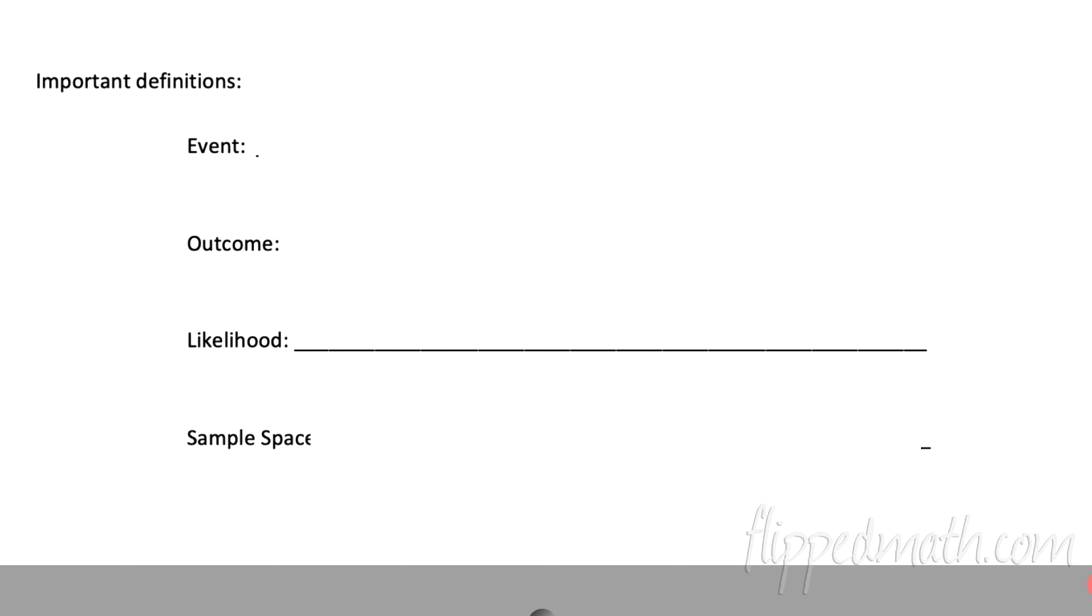Next, let's get some important definitions because we will be using these words. I want to make sure that we define them. So the first thing, an event, if we start talking about an event, then that is an action that takes place. It could be anything. It could be the weather. It could be raining. It could be the school gets closed for snow. It could be that I have pizza for lunch. It could be really anything that you want to look at. That's what an event is.